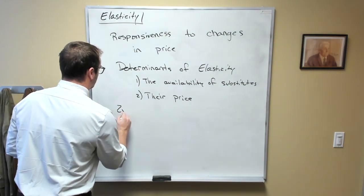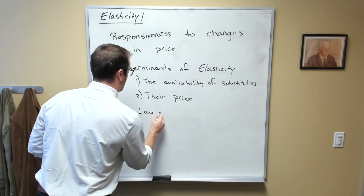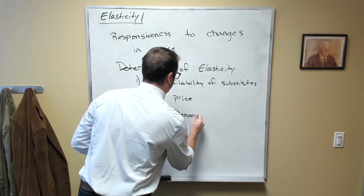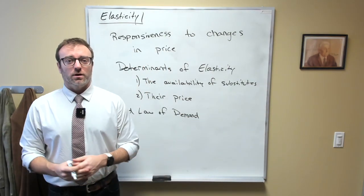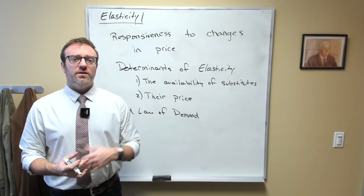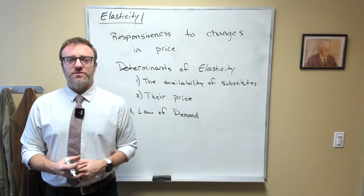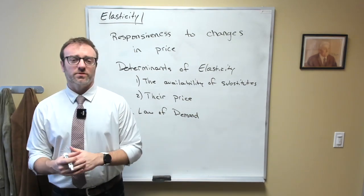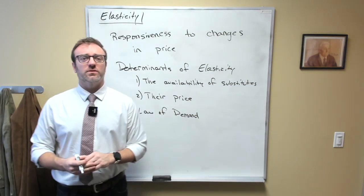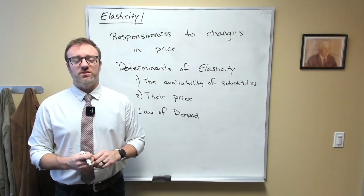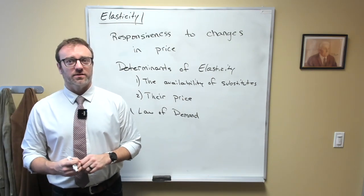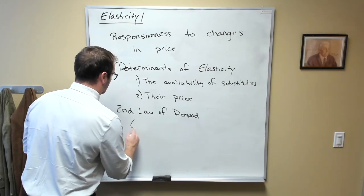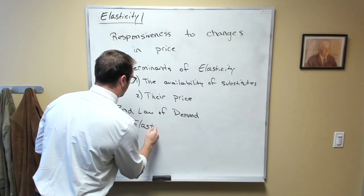This actually leads us to the second law of demand. The first law of demand, as you recall, is that demand curves slope down — or more formally, there exists an inverse relationship between the price of a good and the quantity of the good demanded. The second law of demand is that elasticity increases over time.